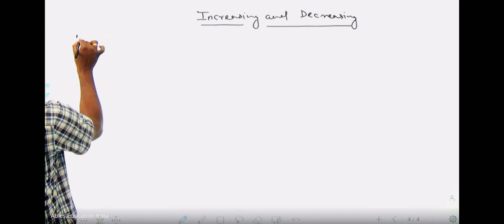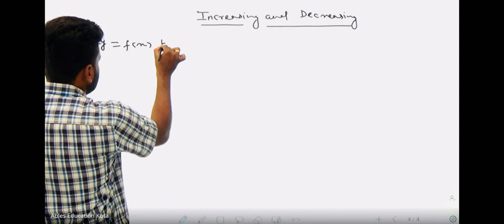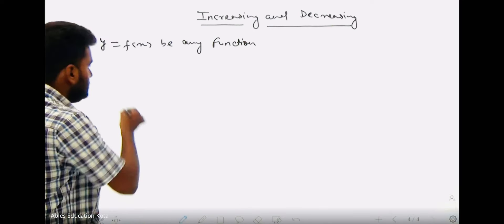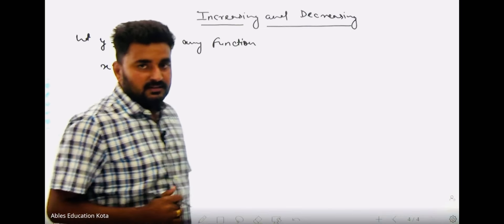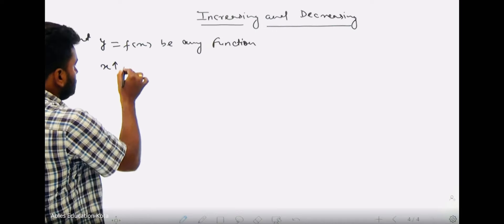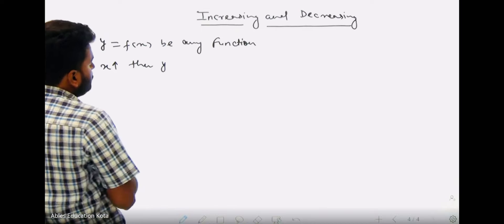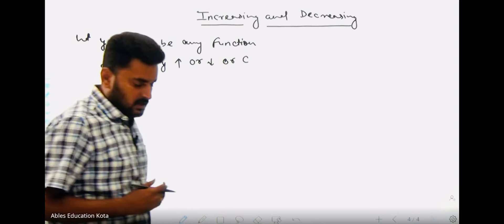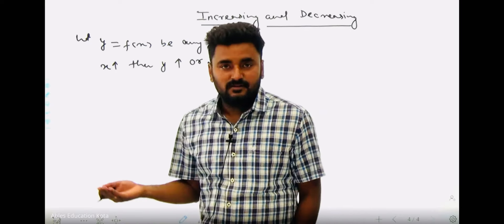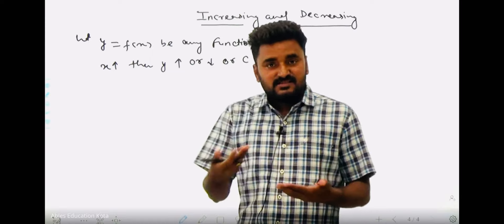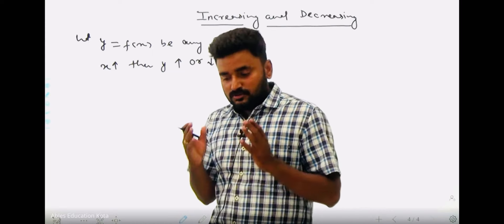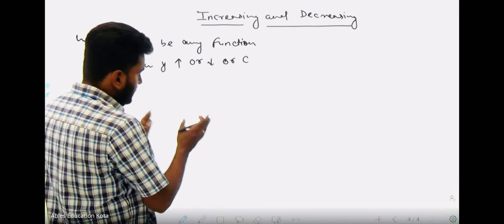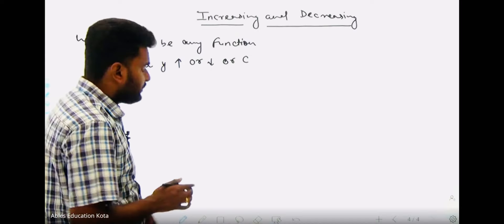Let's suppose y = f(x) be any function defined on a closed interval [a, b]. Now, suppose the value of x is increasing — what do you think about the value of y? The value of y will be either increasing, decreasing, or constant. Let's take some graphs to understand increasing and decreasing functions.